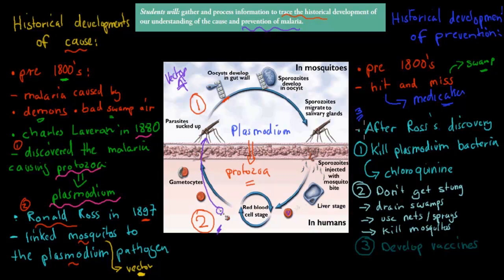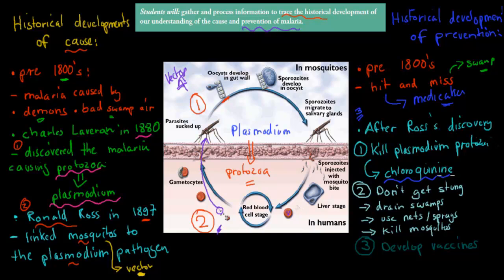The first way was to kill the plasmodium protozoa. For a long time we used chloroquine, a medicine designed to kill plasmodium, and that worked for a while. But the problem is that eventually the plasmodium protozoa developed resistance to the medication, and it became less and less effective. So overall, killing the plasmodium protozoa has not been that effective because whenever we developed a medicine, they became resistant to it.